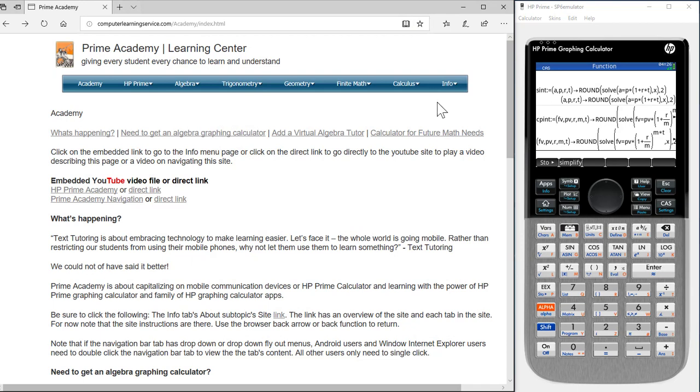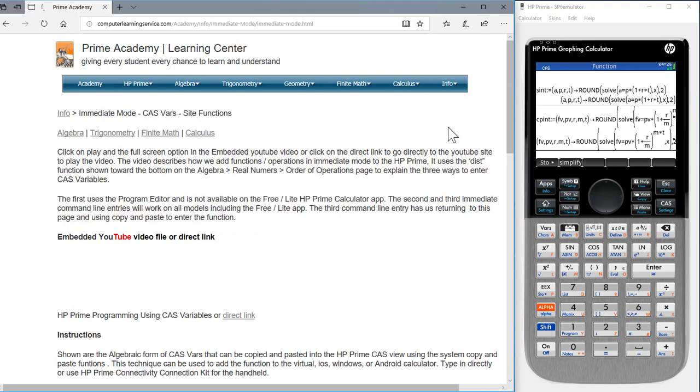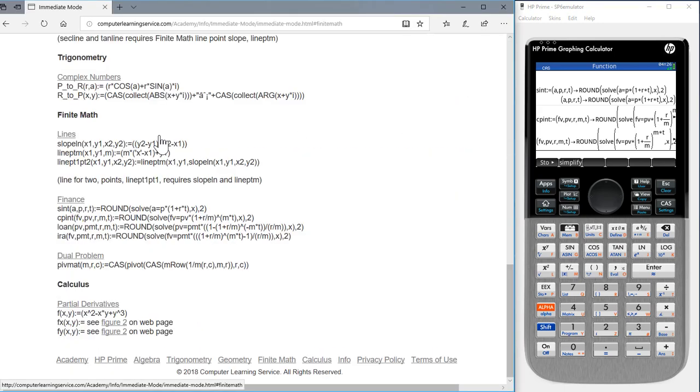The functions that we add to our calculator are found under the info drop-down menu, immediate mode, CAS variables. Here we will click on finite math.